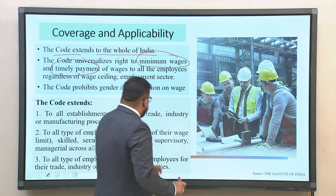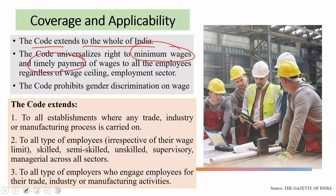The code extends to all establishments where any trade, industry or manufacturing process is carried on. All types of employees irrespective of their wage limit — whether skilled, semi-skilled, unskilled or supervisory, managerial — across all sectors came under the coverage of the same. And finally, the code extended to all types of employers who engage employees for trade, industry or manufacturing activities.